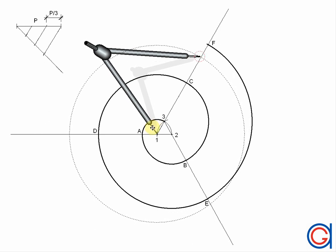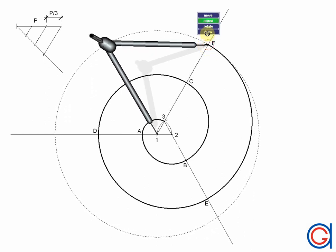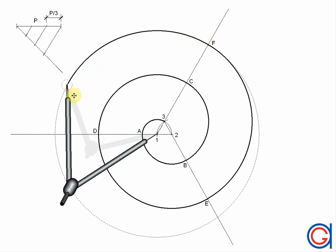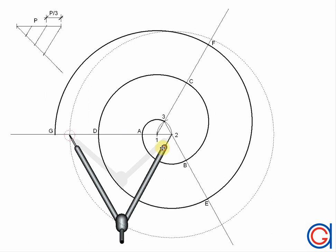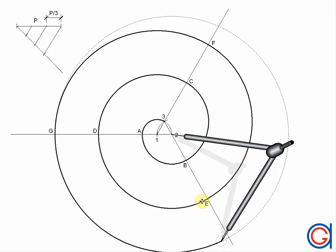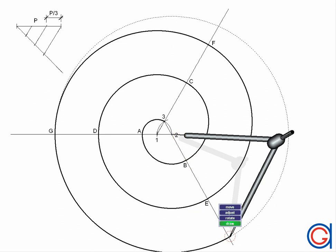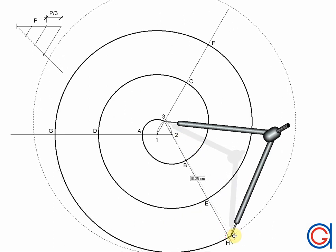Again with our compass set on point one and distance one–F, we scribe another arc to the left until it cuts our horizontal line, calling this point G. With our compass centered on point two and length two–G, we scribe an arc until it cuts the prolongation at point H. The typical errors in these exercises are: not drawing the polygon correctly, setting the compass on the incorrect centers, and wrong direction with the prolongations.